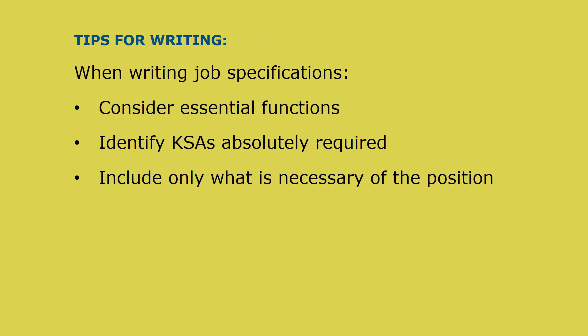When writing job specifications, use the following guidelines. First, consider each essential function and identify the knowledge, skills, abilities, competencies, or other job specifications that are absolutely required for the employee to perform the responsibilities and essential functions of the job. When selecting knowledge, skills, and abilities, consider only those that are required by essential functions and associated responsibilities.